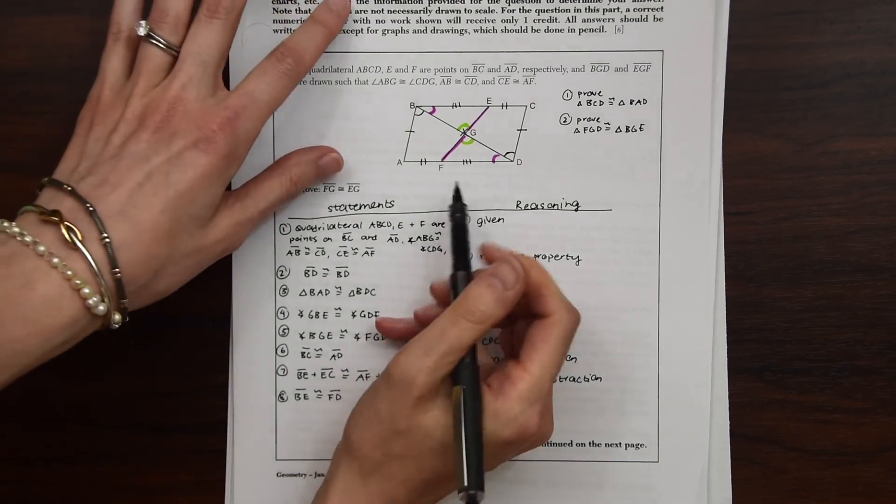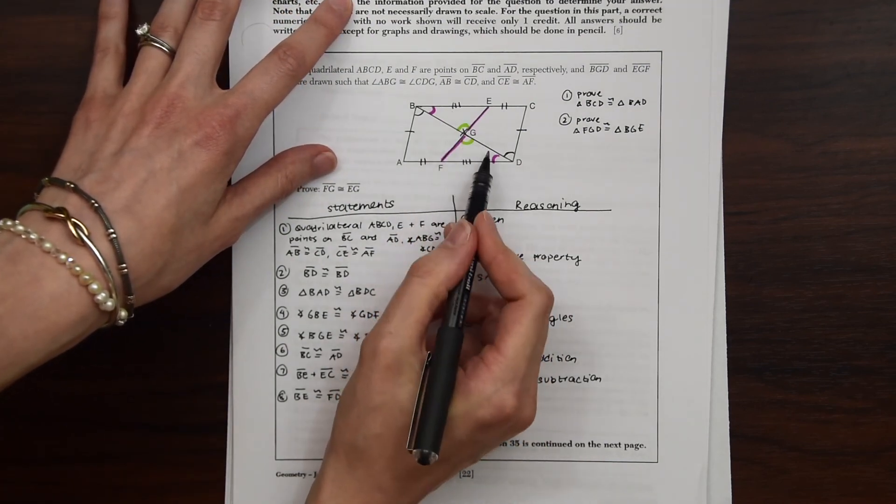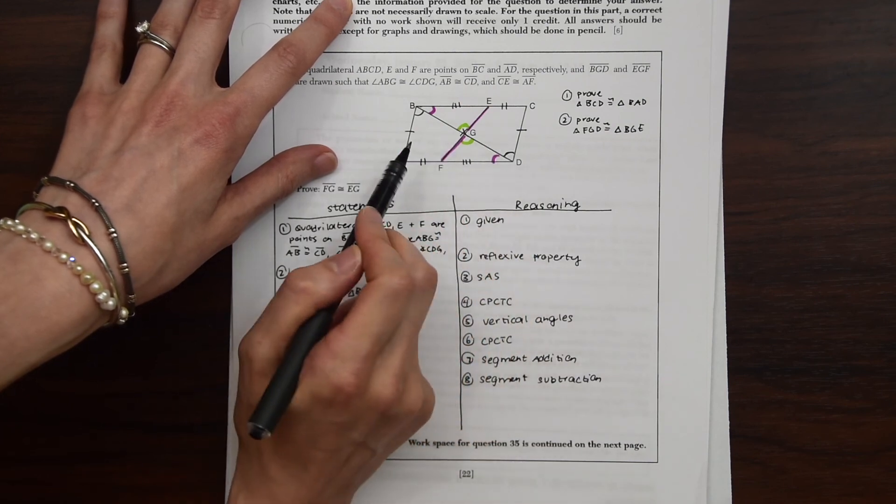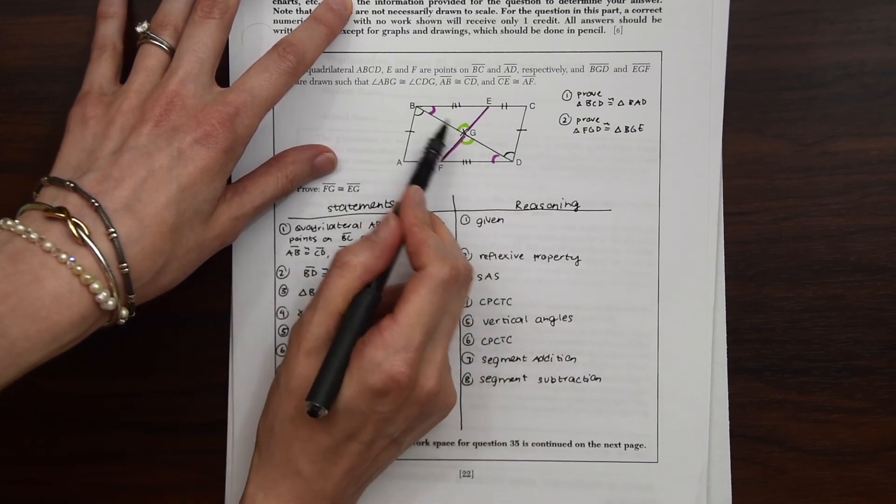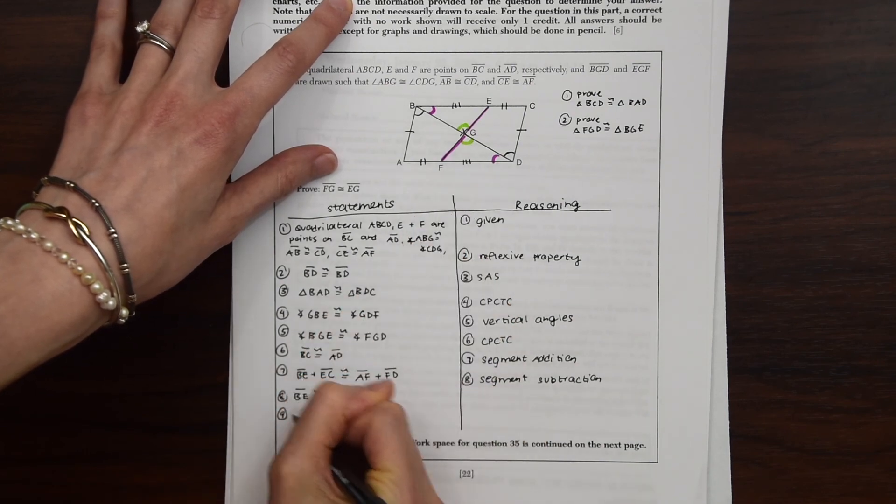So now, notice we can prove that these two triangles are congruent to the smaller ones that we just marked up by angle, angle, side. Because we have this angle, this angle, and then this side, angle, angle, side. So let's write that out.